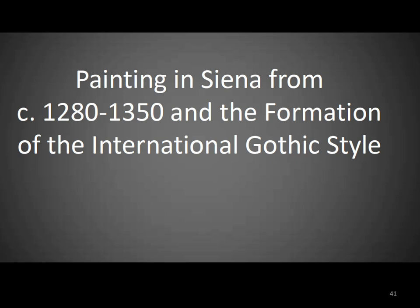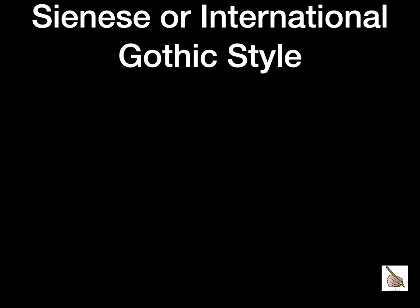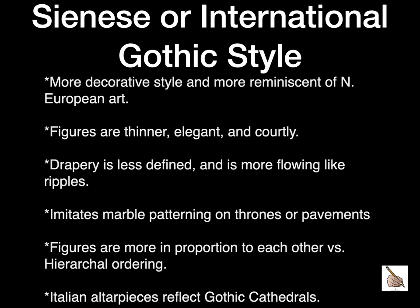Now we will look at painting in Siena from approximately 1280 to 1350 and the formation of the international Gothic style. Characteristics of the Sienese or international Gothic style include a more decorative style reminiscent of Northern European art. The figures are thinner, elegant, and courtly — meaning polite or refined. The drapery is less defined and more flowing like ripples. It imitates marble patterning on thrones or pavements. Figures are more in proportion to each other versus hierarchical ordering. We will also see Italian altarpieces that reflect Gothic cathedrals.